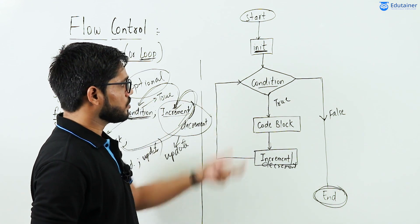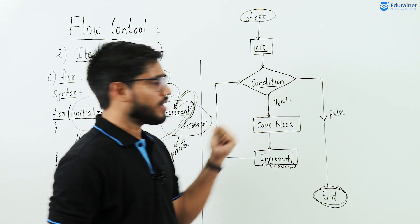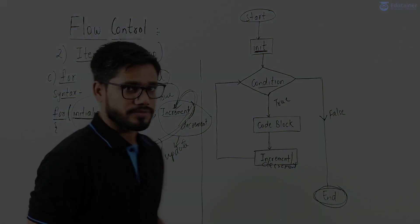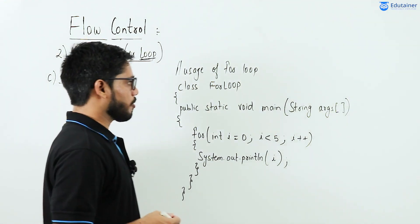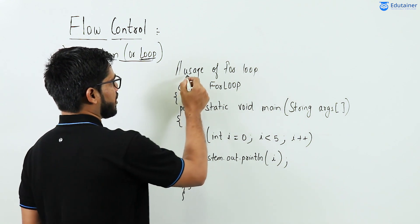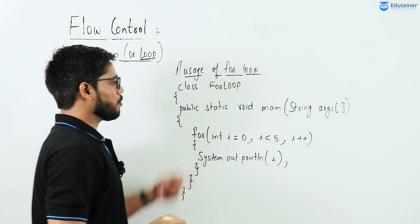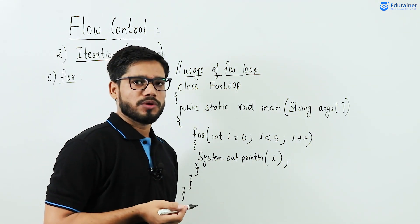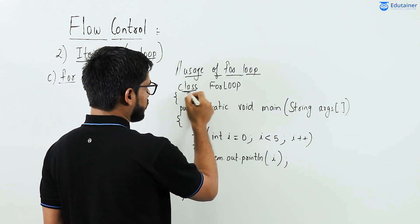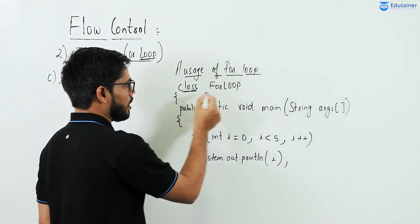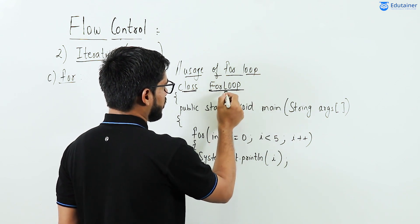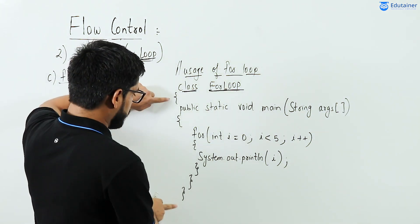So this is the particular way of using for loop. We have seen the syntax and studied the flow diagram. Now let's look at a program. Here the first line I used is a comment — 'usage of for loop' — just to demonstrate the concept. After that I created a class, because any Java program without a class is not possible. The class name is ForLoop, where F and L are capitalized.